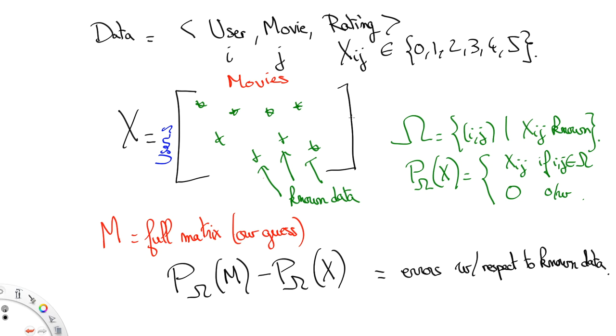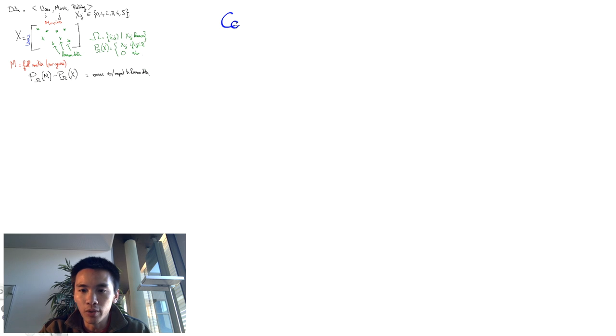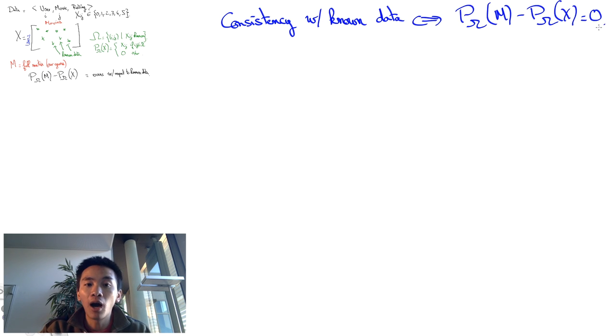Now, if we wanted the matrix M to perfectly match the matrix X for known entries, we'd impose the difference to be 0. However, real data are always noisy. You should never demand perfect fitting of the data since this would likely lead to overfitting. And overfitting is bad.